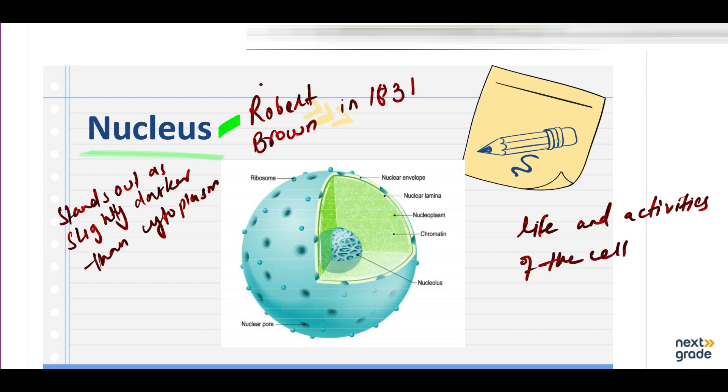This is what the nucleus looks like in the diagram. The internal structure is the nucleolus, this is the chromatin, the nucleoplasm, the nucleus lamina, nuclear envelope, ribosomes, nuclear pores. This is what the nucleus looks like.